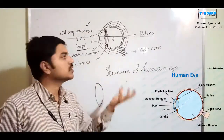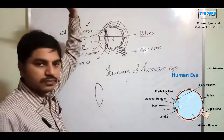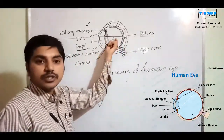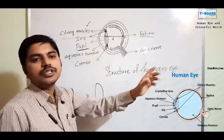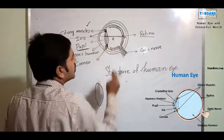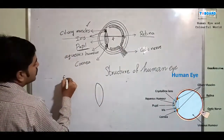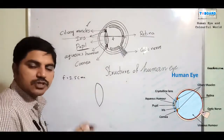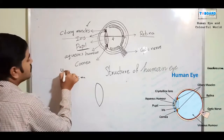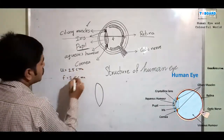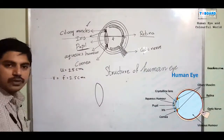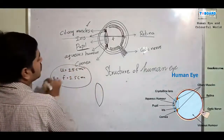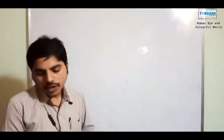After refraction, rays meet at the focal point; the distance from lens to retina is the focal length. The image position on the retina is fixed — always 2.5 centimeters from the lens. The least distinct vision of the human eye (object distance) is 25 centimeters.